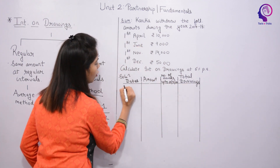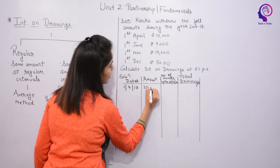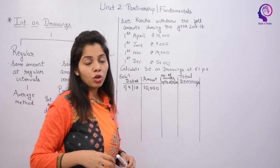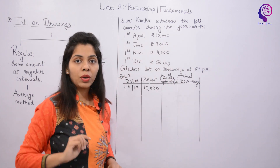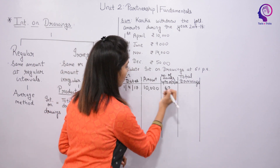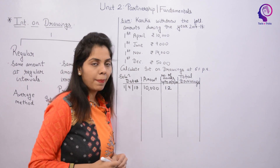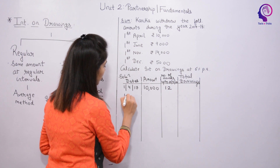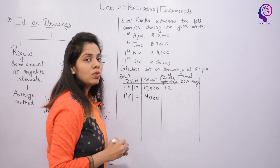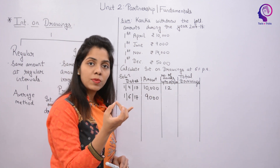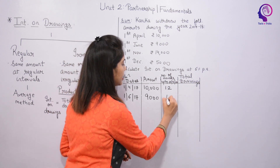Let's start. First: 1st April, amount 10,000. From April to March is 12 months, since the financial year runs from 1st April to 31st March. So interest is charged for the full 12 months. Next: 1st June, amount 9,000. From June to March — June, July, August, September, October, November, December, January, February, March — that is 10 months.